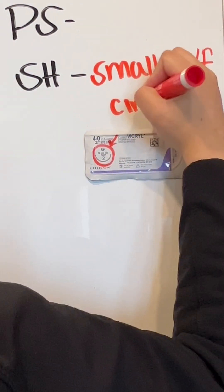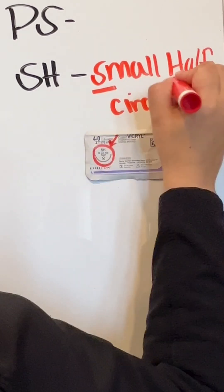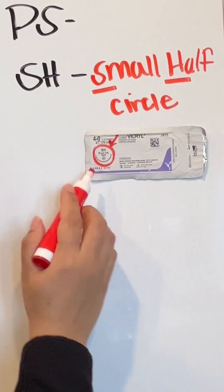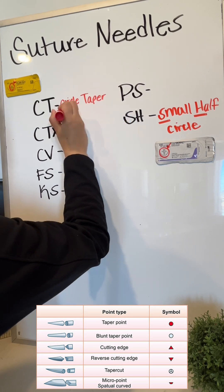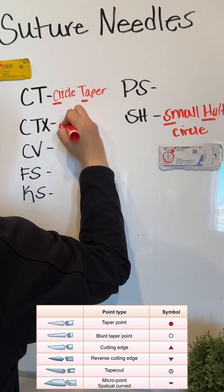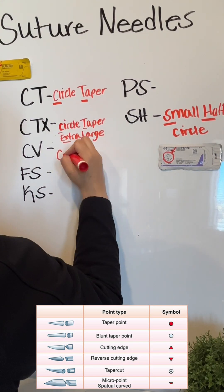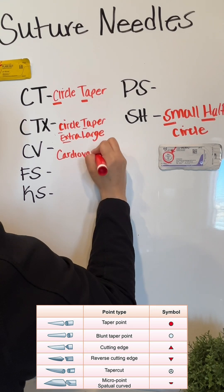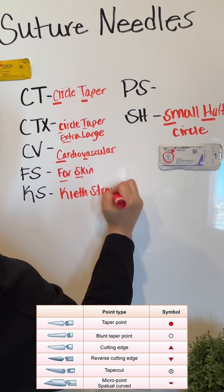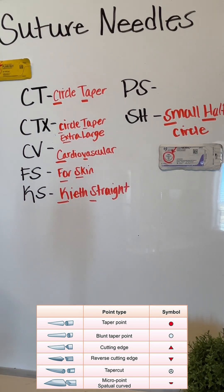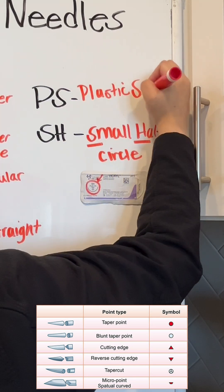Here you can see a 4-0 vicryl on a SH. SH stands for small half circle. These are going to be some common needles you will see when you are first starting out. You have a circle tapered needle, a circle tapered needle extra large. There's also a Keith needle that we'll see here in just a sec. A popular needle that you will see often is a PS2, typically for skin.